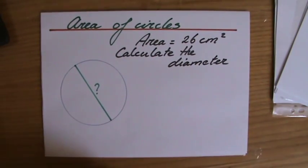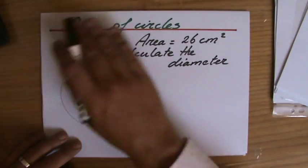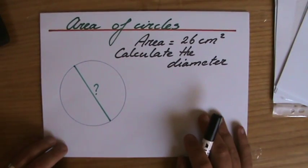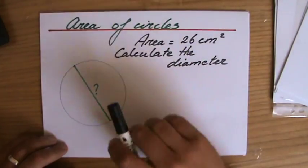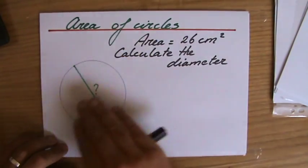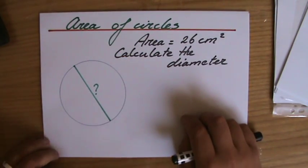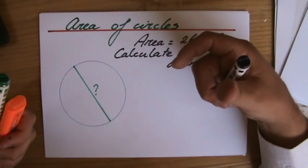Now here we go. Last video, last example question about the area of circles. And it is the other way around now because they tell me the area is 26 centimeters squared - they give me the area.